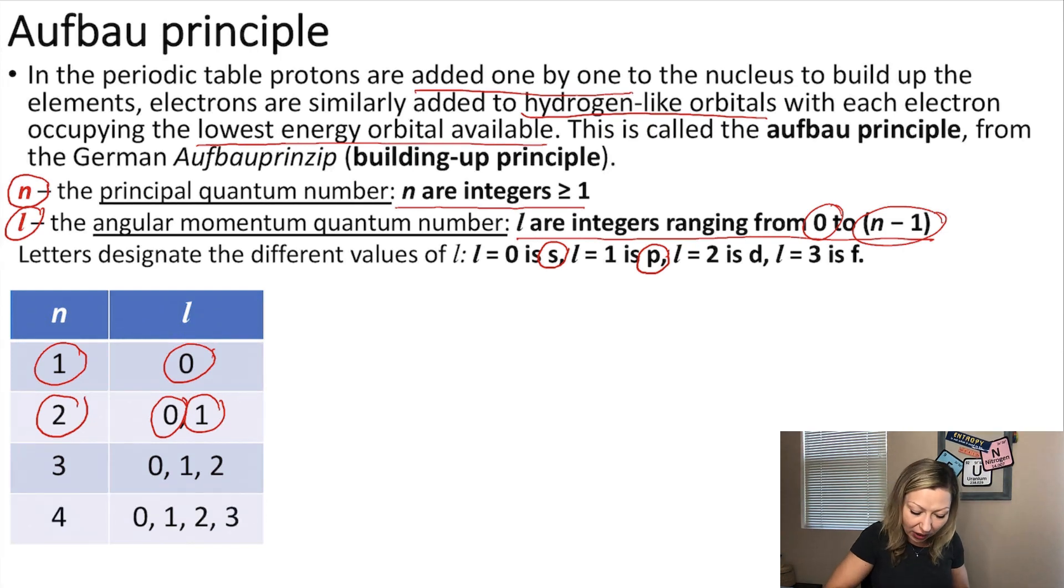Similarly, when n equals three, l can be either zero, one, or two. If l equals two, that is a D orbital. And when n equals four, l can be zero, one, two, or three. When l equals three, we are going to have an F orbital.